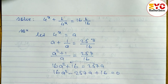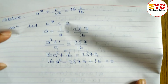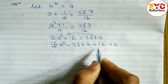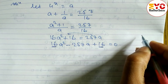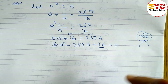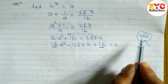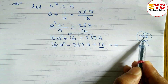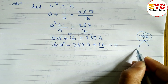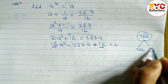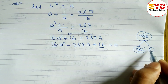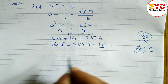We rearrange this to the standard form. Moving terms to the left side: 16a² - 257a + 16 = 0. Now to factorize, we multiply the first and last coefficients: 16 × 16 = 256. We need two factors of 256 that add up to 257 — those are 256 and 1, since 256 + 1 = 257.